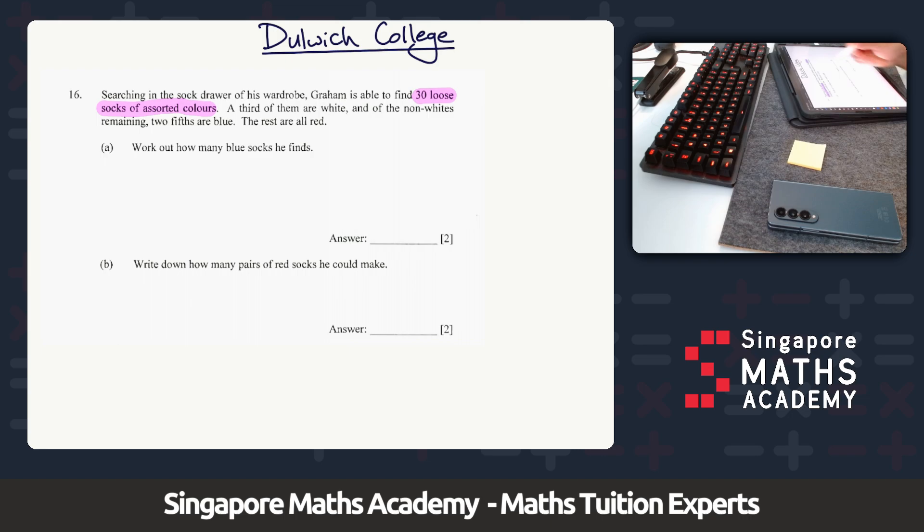Oh no, I made a mistake there. A third of them are white, and of the non-whites, remaining two fifths are blue, the rest are red. Work out how many blue socks he finds. Okay, wow, a bit of a challenging question.